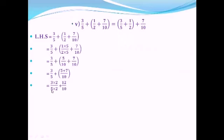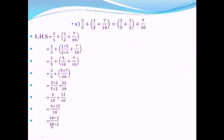Now we have 3/5 + 12/10. We make 5 into 10 by multiplying by 2: 3×2=6, 5×2=10. Denominators are the same, so 6+12=18 over 10, giving 18/10. Both 18 and 10 are divisible by table 2: 2×9=18, 2×5=10, giving 9/5. Since the numerator 9 is greater than the denominator 5, this is an improper fraction, and we divide: 9÷5 = 1 remainder 4, giving 1 whole 4/5. This is the left-hand side answer.